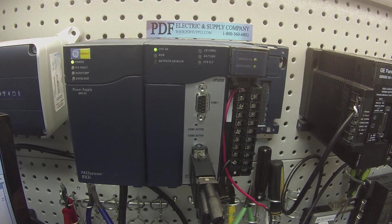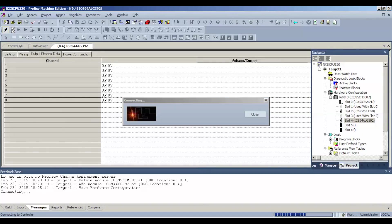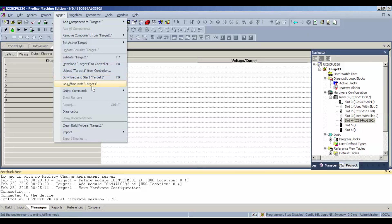I'm going to click the lightning bolt icon to connect up to the processor. I'm happy with all my settings and adjustments. Once I'm connected, I'll toggle to online mode. The bottom right-hand side should be programmer, stop disabled, configuration not equal, logic not equal. That's because the processor was doing something different than what we're asking it to do now.